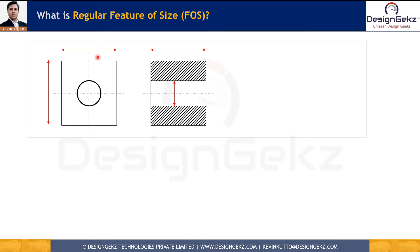There are two types of feature of size: regular feature of size and irregular feature of size. A regular feature of size is one cylindrical surface such as a hole, a spherical surface like a ball, a circular element, a set of two opposed parallel line elements like two edges, or opposed parallel surfaces. The only condition is they should have a single directly toleranced dimension associated with them.